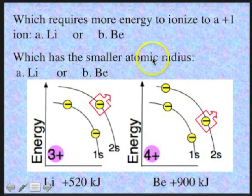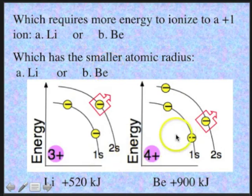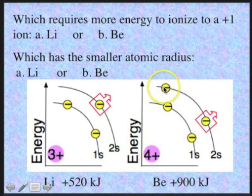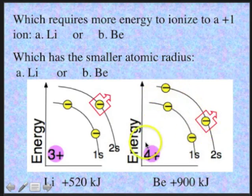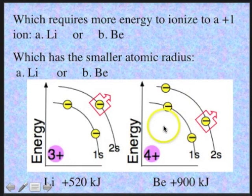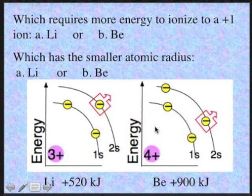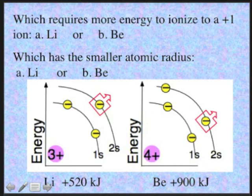Which has the smaller atomic radius, lithium or beryllium? Beryllium, with its +4 nuclear charge versus lithium's +3, has a greater effective nuclear charge on its outer shell electrons, drawing them closer to the nucleus and diminishing the atomic radius. This trend continues across a period because the nuclear charge keeps increasing while counter electrons are added to the same principal energy level. Only when electrons begin to inhabit the next period's valence shell does the atomic radius increase.